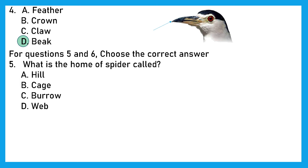For questions 5 and 6, choose the correct answer. Question 5. What is the home of spider called? Is it hill, cage, burrow, or web? We all know that spider has a web. Option D is the right answer.